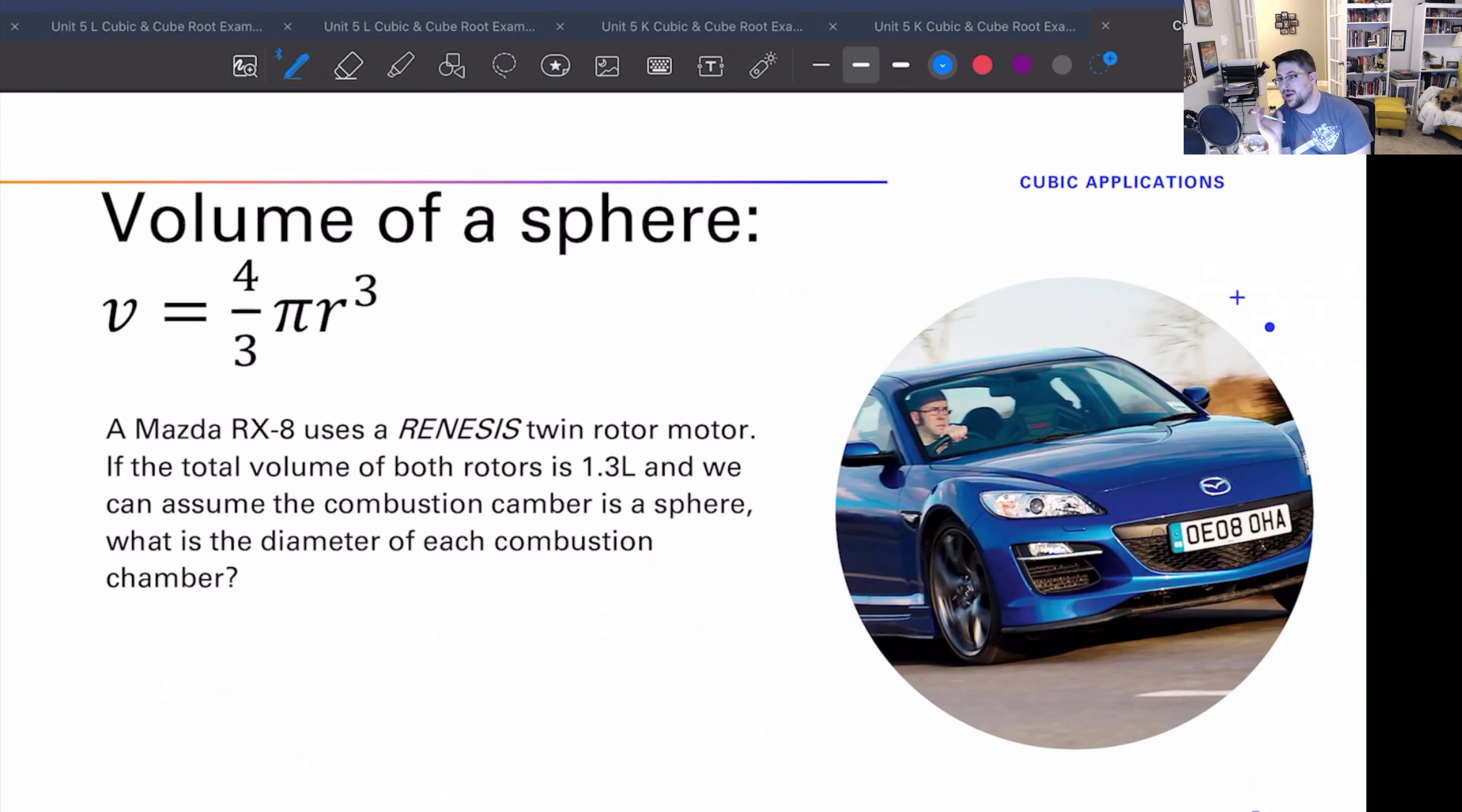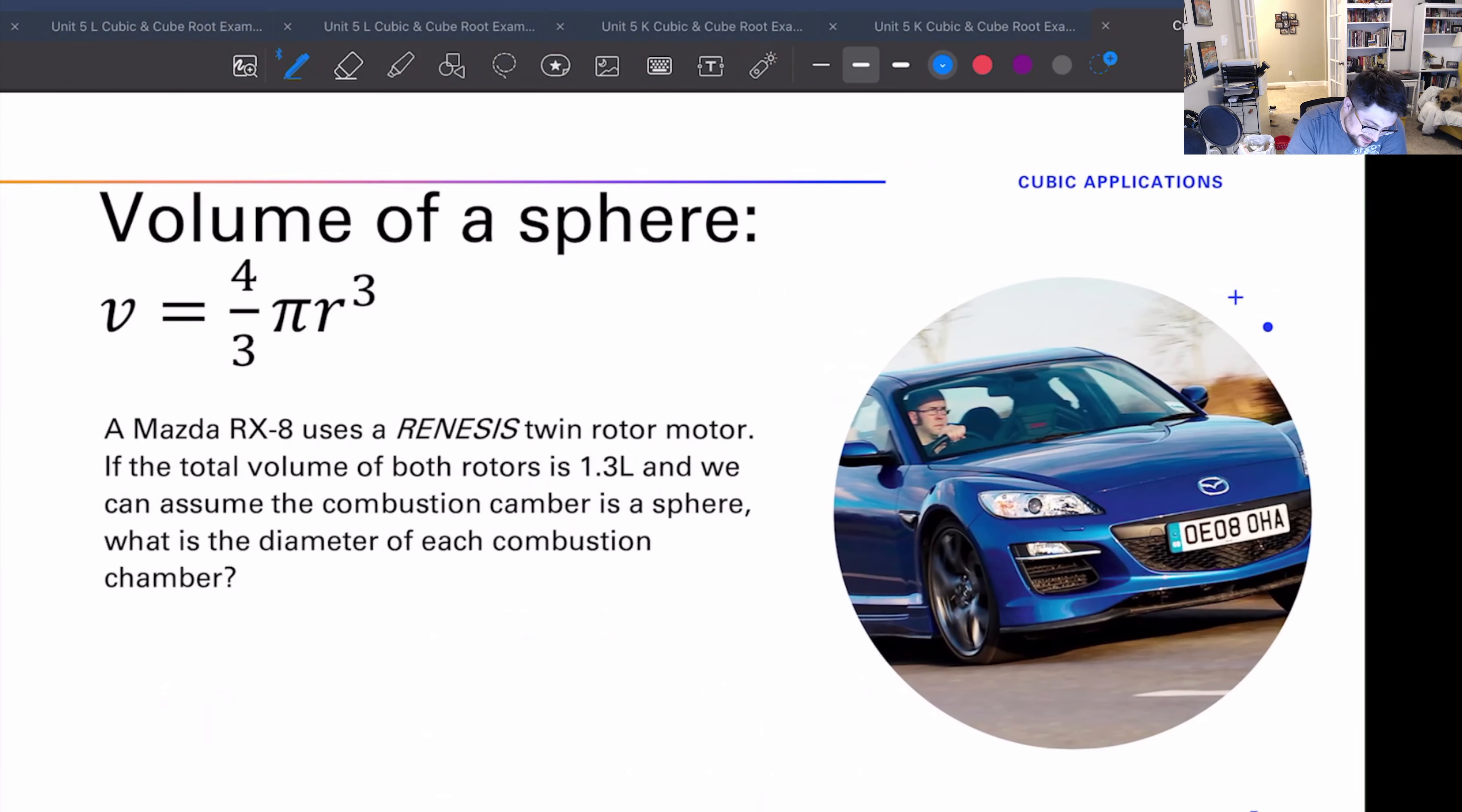The total volume of both rotors together is 1.3 liters, and let's assume that the entire thing is blowing up, the entire thing is the combustion chamber. Don't really how it works, really it's about a third of it, but just for the sake of making our lives easier, let's find the diameter of each of these little spinning triangles of doom. These things rev to about 9,000 RPM, they're super fun motors to deal with.